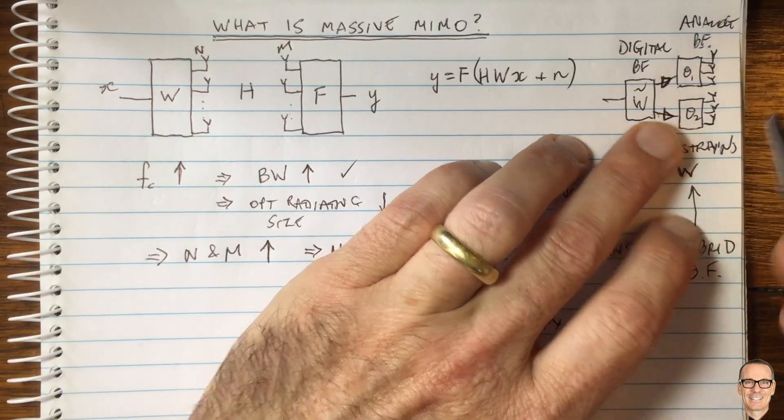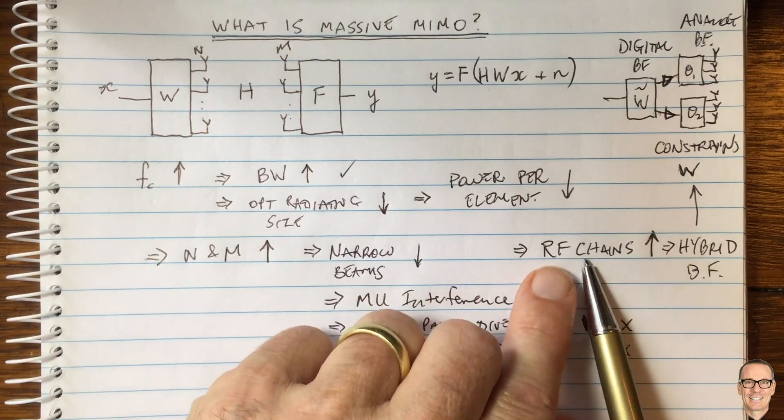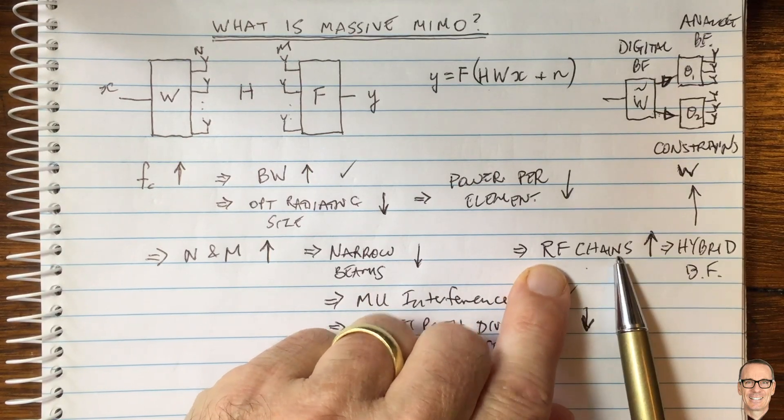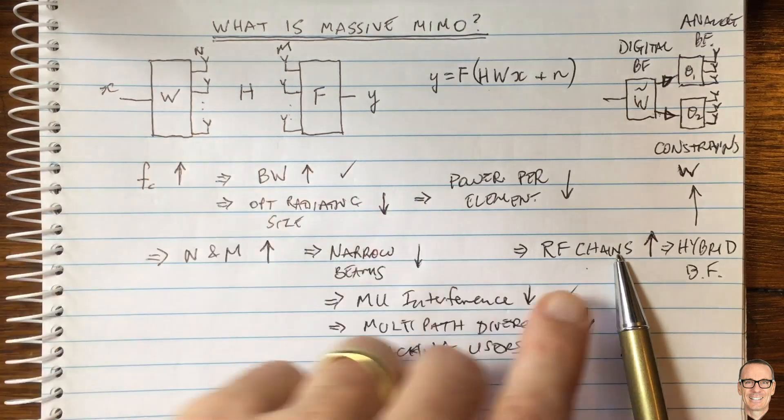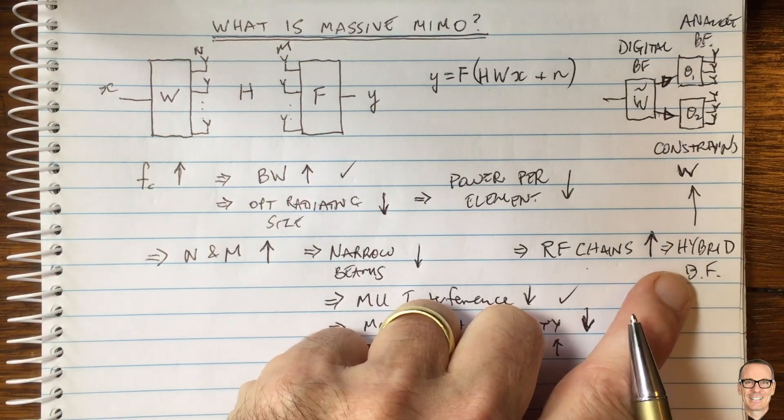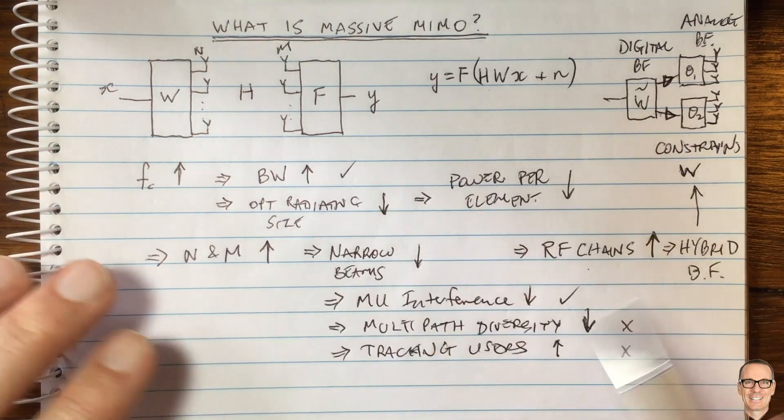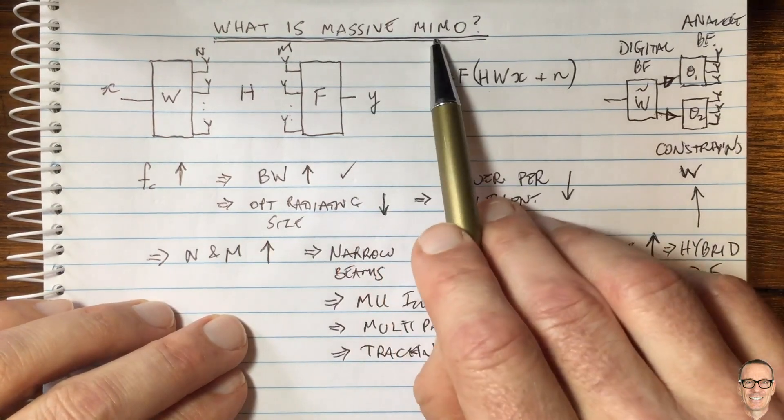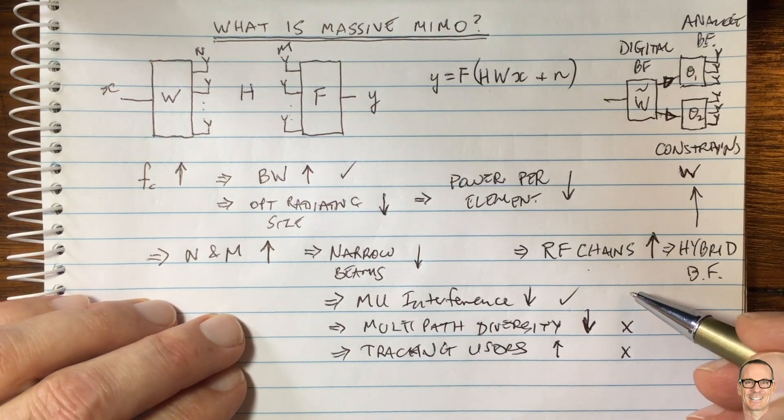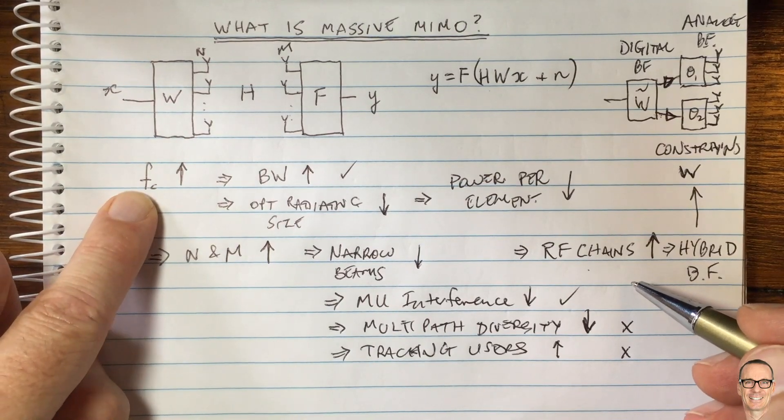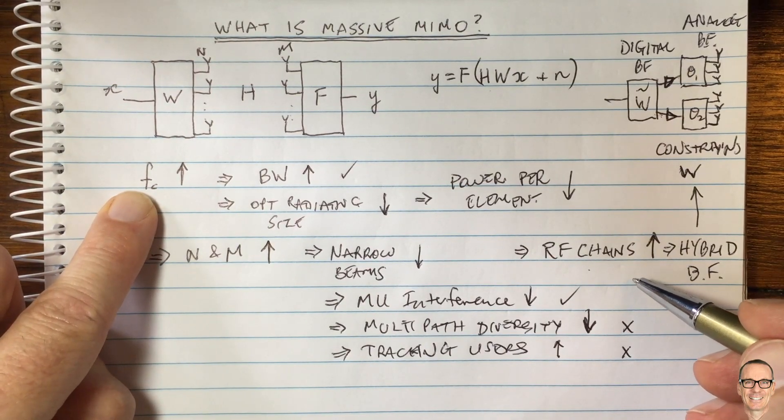This is a combination of digital and analog because of this problem of not being able to have one amplifier or RF chain for each antenna element. This leads to the hybrid design. These are the main aspects around massive MIMO that you have to take into account as we move towards higher carrier frequencies in 5G and beyond.